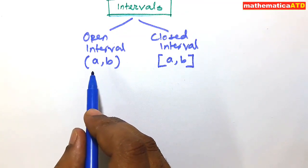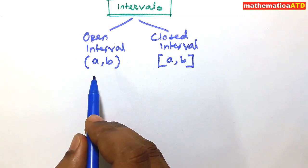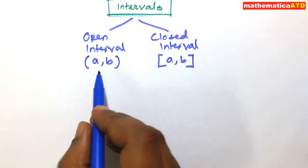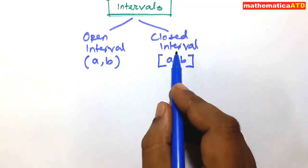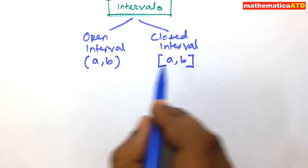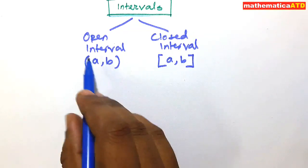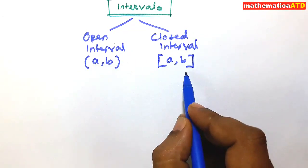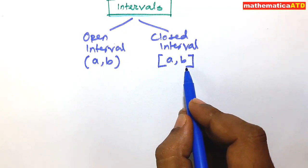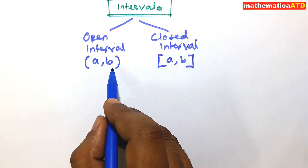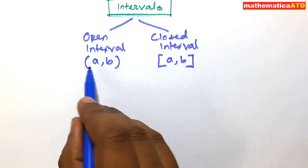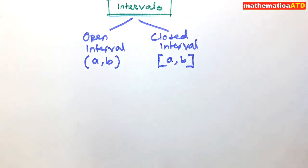To represent an interval we use interval notations. We write the endpoints and separate them by a comma. If the endpoints are included then we use square brackets; if the endpoints are not included then we use round brackets. A closed interval includes all its endpoints, while an open interval does not contain its endpoints. We note some intervals and their interval notations.